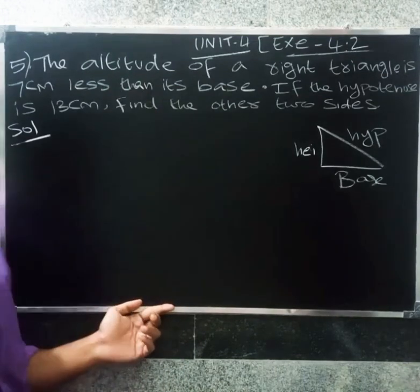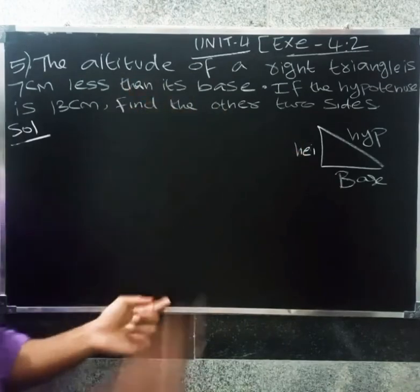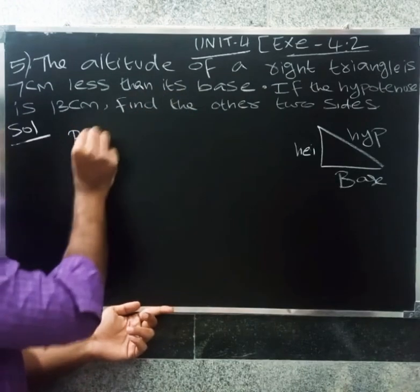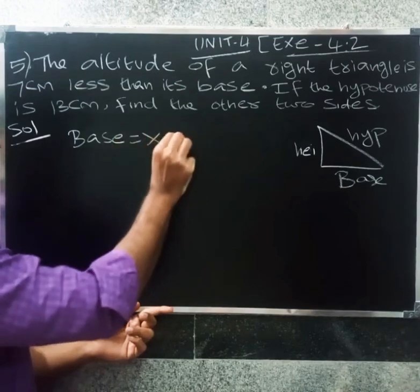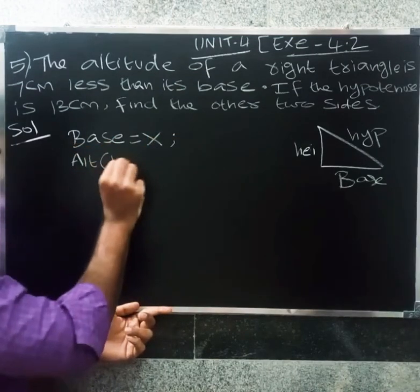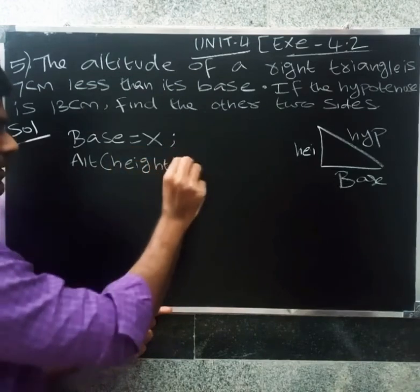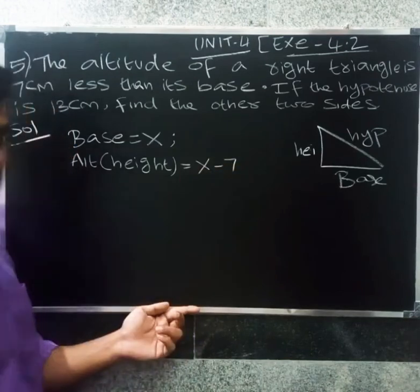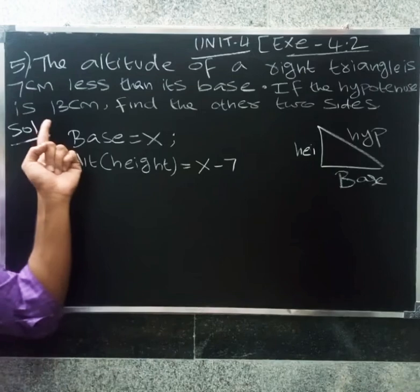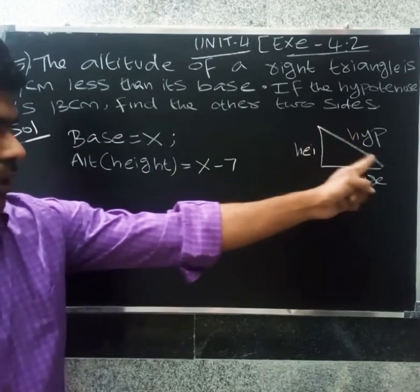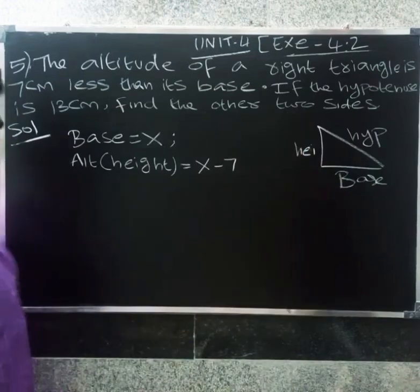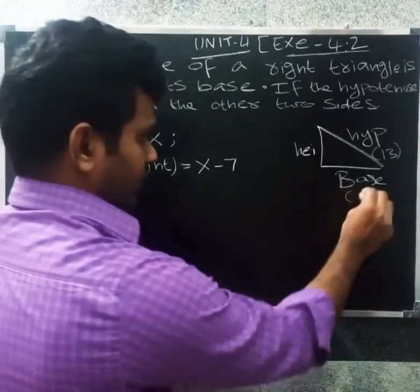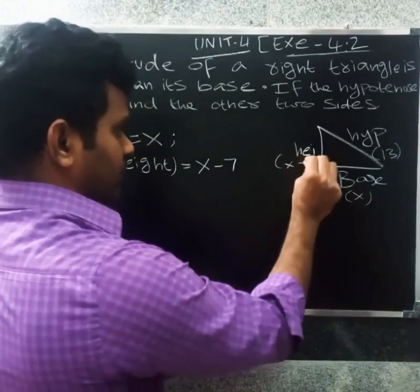The altitude of the right triangle is 7 cm less than its base. The hypotenuse is 13 cm. Find the other two sides. The hypotenuse is 13 cm. Now, let base be x and height be x minus 7 cm.